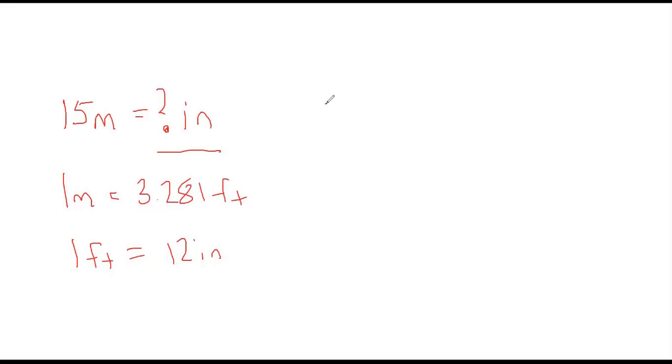We always set it up with our original as a fraction, right? 15 meters over one. Now what we want to do is cancel out units. We start with meters, we want to get to inches, so meters have to go in the denominator. That way our meters are going to cancel out. A meter divided by a meter cancels out, and that gives me my feet. Then I put my ratio in here: 3.281 feet equals one meter. Now I'm left with feet.